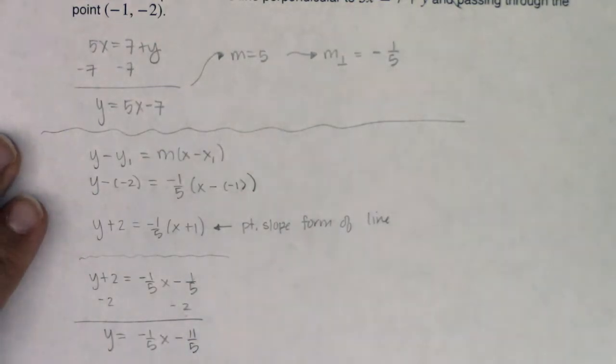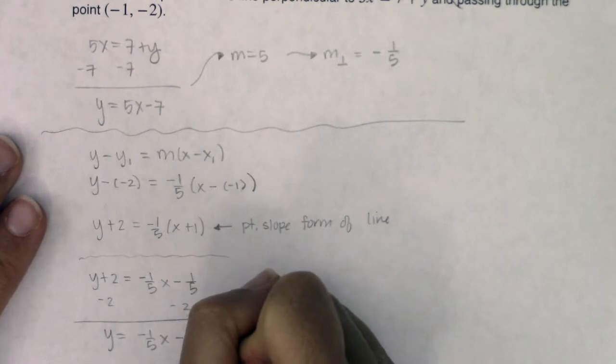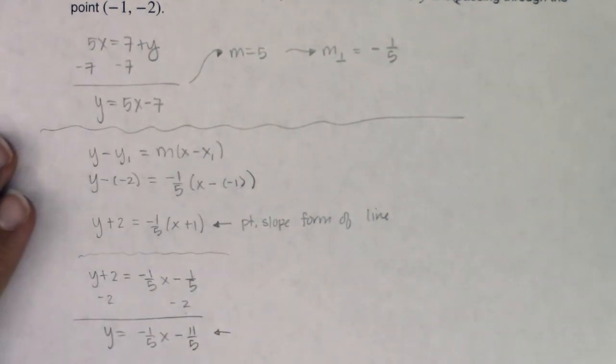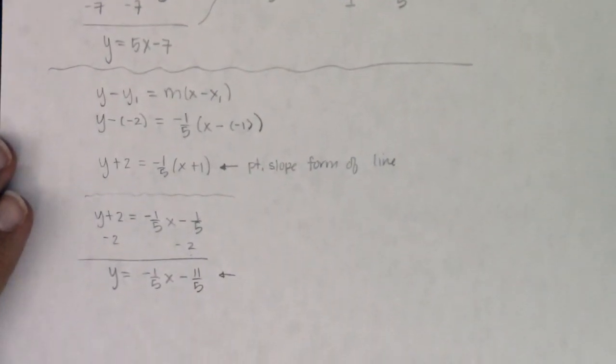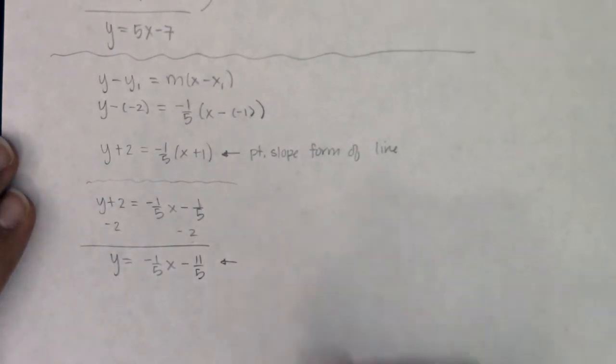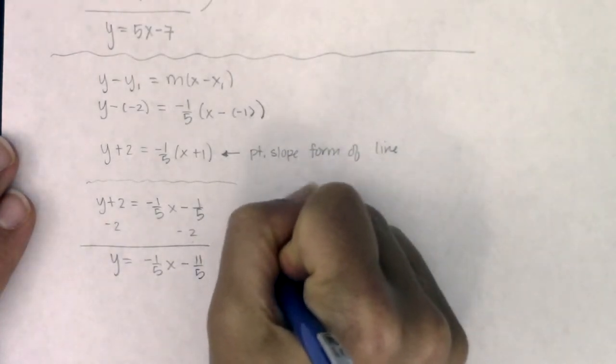Now, if you're happy here, this is the slope intercept form of the line. Again, I'm going to scooch this up just so we have all of this stuff in view. This is also an acceptable answer.